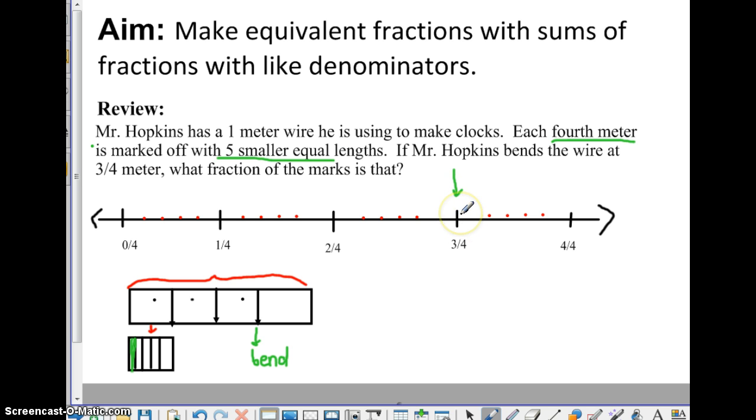Okay, and he bends it here at 3 fourths. So how would you find the answer here? What fraction, if it's 5 smaller parts, equals 3 fourths? So we're looking for an equivalent fraction with a different denominator. So we're going 5 equal lengths. So we need to count 1, 2, 3, 4, 5, 6, 7, 8, 9, 10, 11, 12, 13, 14, 15 parts out of what's the possible whole here. If we kept going to 1, we would have, we stopped at 15, right here, 16, 17, 18, 19, 20. So it would be 15 out of 20 would be the smaller fraction that would be equivalent to 3 fourths.